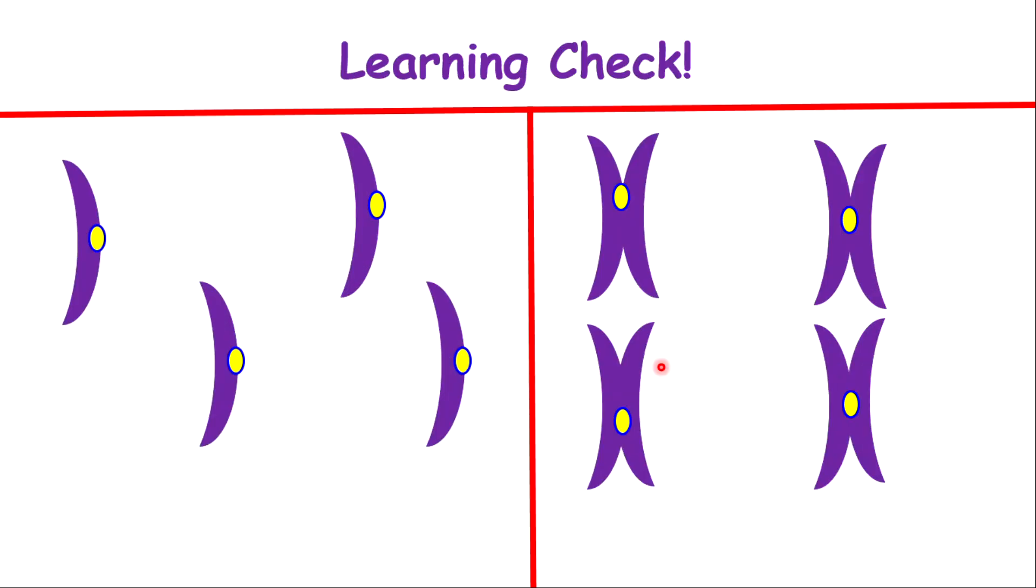Let's do a learning check. On your left, how many chromosomes and how many chromatids are you seeing? Absolutely right. There are four centromeres, therefore must be four chromosomes and four chromatids.